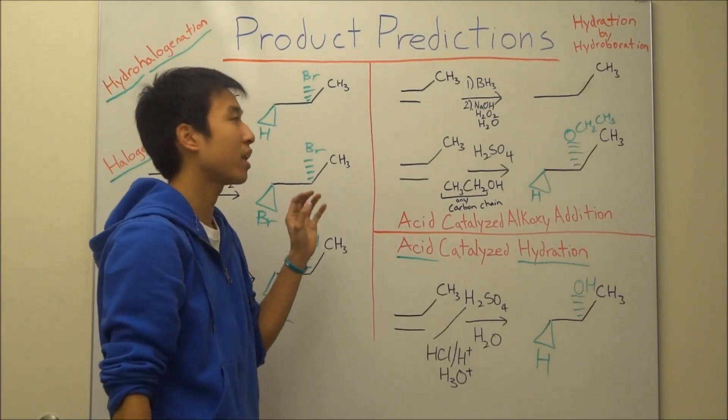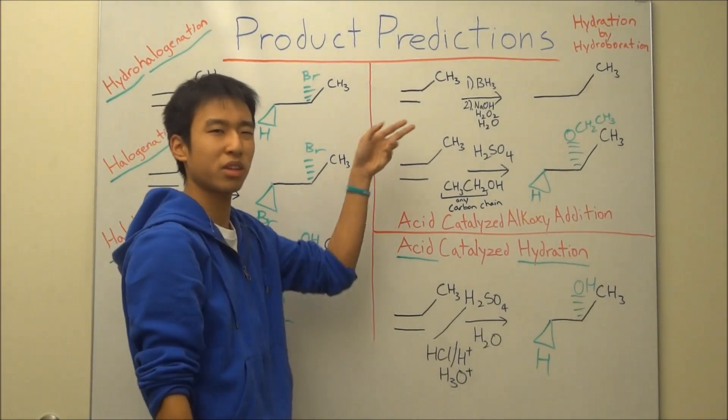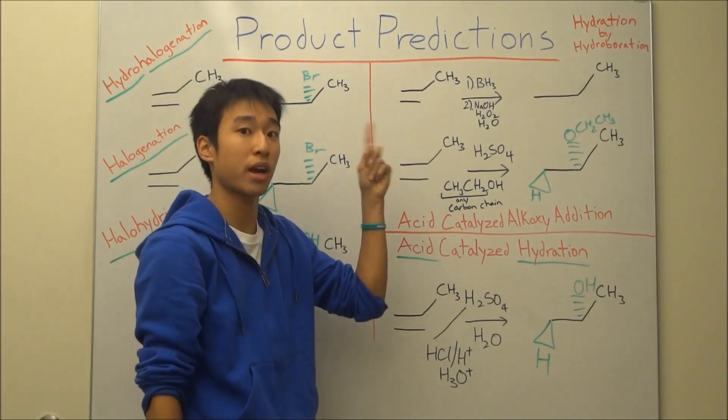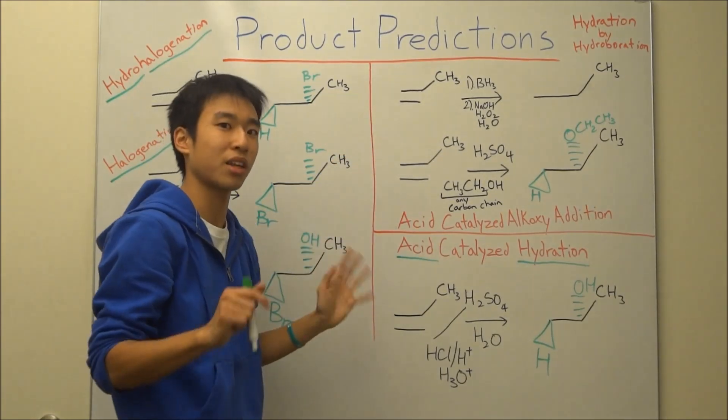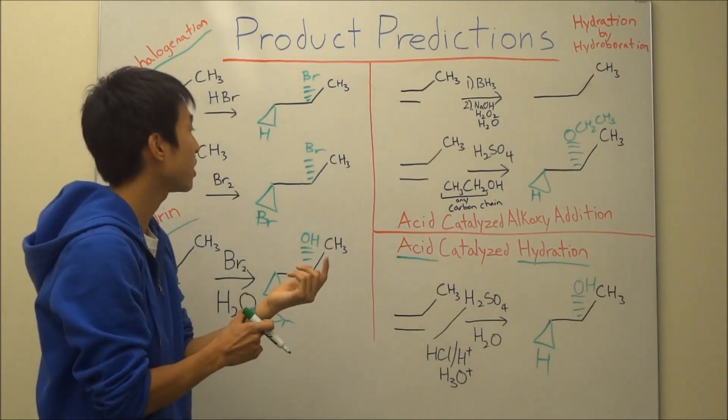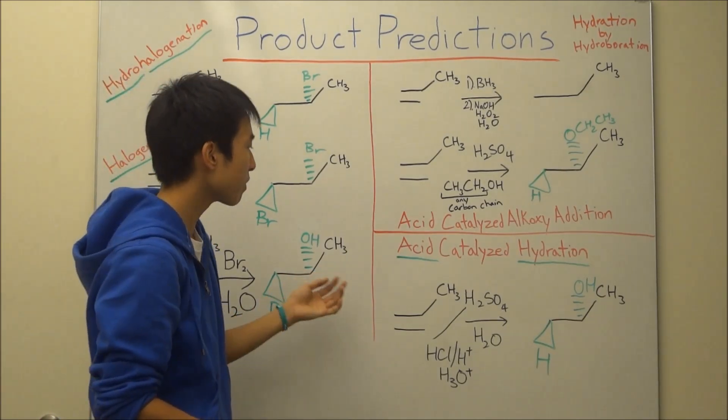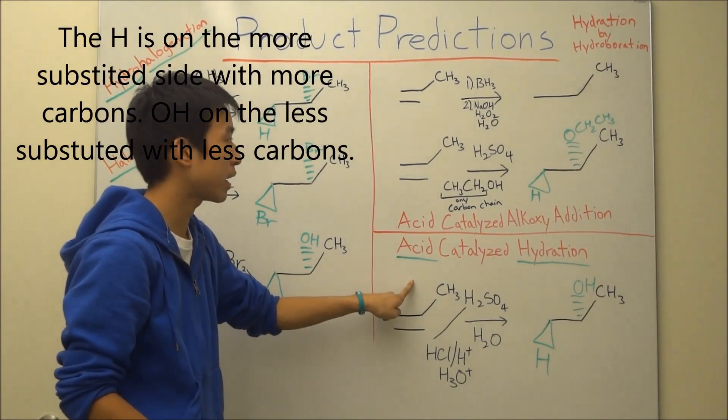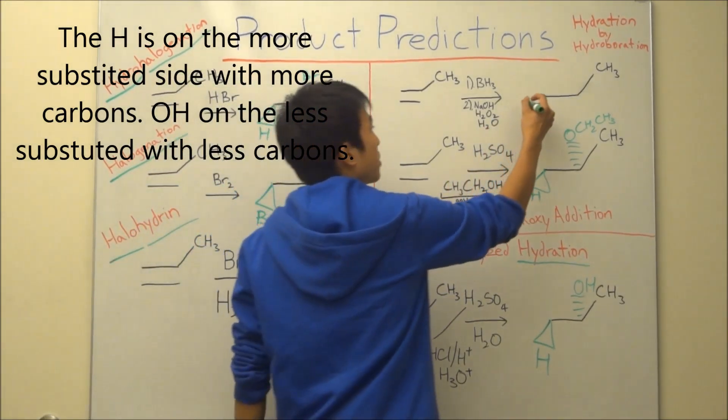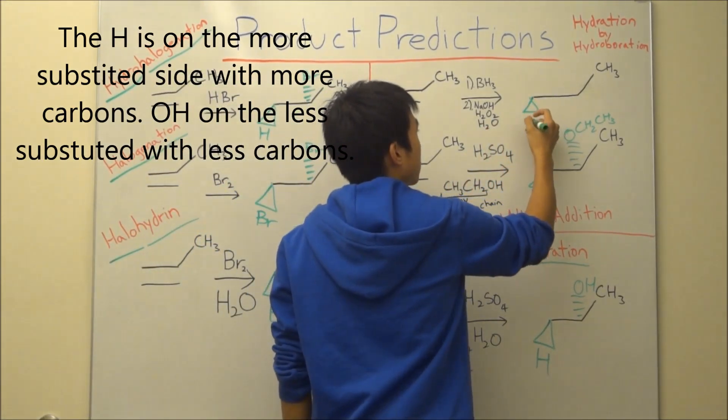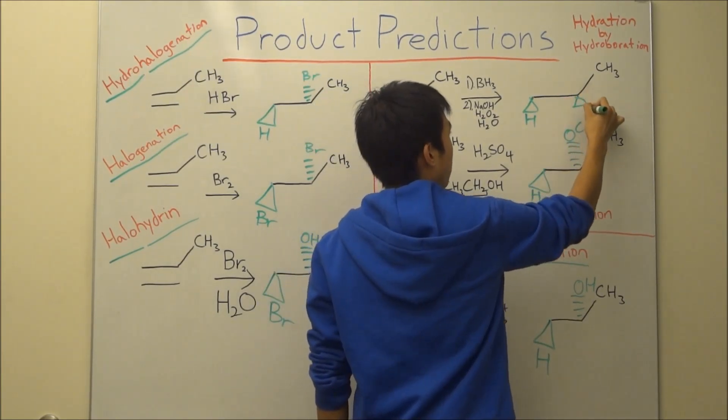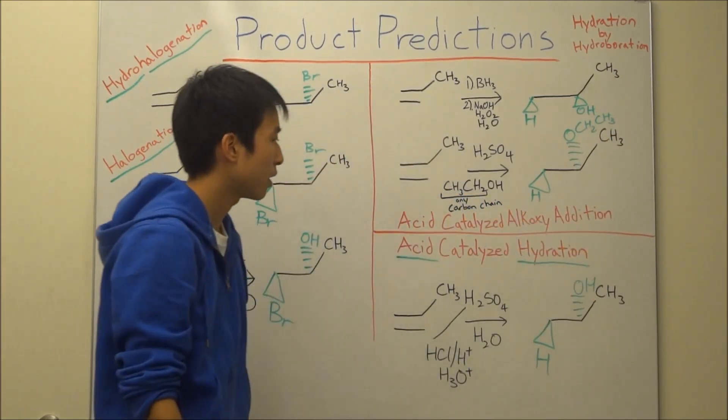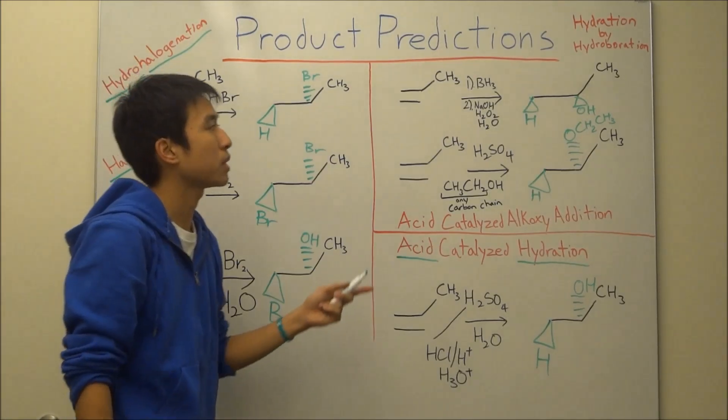And then the last one here. This one, most people have a lot of trouble with just because it looks really complicated. It's hydration by hydroboration. Because you have so many reactants here, you kind of freak out and think, what the heck is happening, right? So the trick to this one here, it's basically just acid catalyzed hydration. But the difference now is that your hydrogen is going to be on the same side as an alcohol group. And that's basically it.